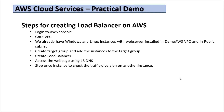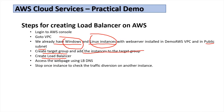In my previous video, we created Linux and Windows instances with a web server on them. So in this video, we already have Windows and Linux instances in our demo VPC and public subnet. We will create a target group for the load balancer, add those Windows and Linux instances into the target group, and create a load balancer. Then we will access the web pages installed on Windows Server and Linux instance using the load balancer DNS.